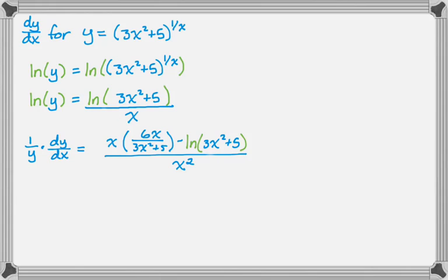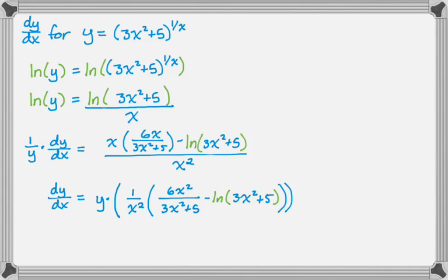I don't know how much I want to simplify this. So let's say dy dx is just y times, bring the 1 over x squared out, and then make it 6x squared by distributing that x. I don't know. I'm going to leave it like that because it's a lot of writing.